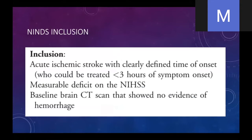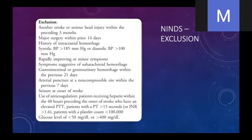I want to talk about the NINDS trial — the National Institute of Neurologic Disorder Study. This was done in 1995, so it's actually 25 years old now, and it still holds the test of time showing that thrombolytics are beneficial to patients. They looked at patients less than three hours from onset with a significant deficit on the NIH Stroke Scale — a scale from zero to 42 points. If they had some clinical deficit, presented within three hours, and had essentially a normal CAT scan, they would be enrolled in the study.